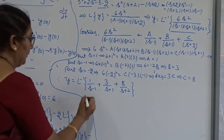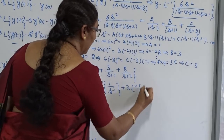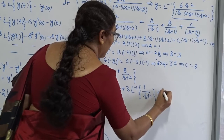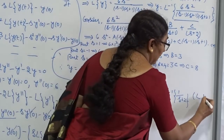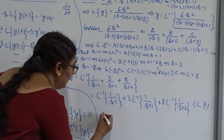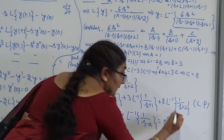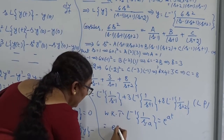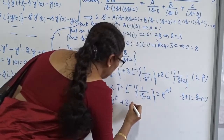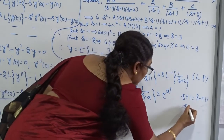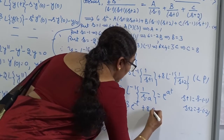Using the formula L inverse of 1 over (S minus a) equals e to the power aT, we get: L inverse of 1 over (S minus 1) is e to the T; L inverse of 1 over (S plus 1), where S plus 1 equals S minus (minus 1), gives e to the power minus T; and L inverse of 1 over (S plus 2), where S plus 2 equals S minus (minus 2), gives e to the power minus 2T. Therefore y equals e to the T minus 3e to the minus T plus 8e to the minus 2T.